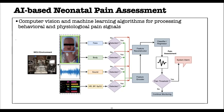For each of these pain signals, if the signal is detected it will be processed using a feature encoder. If the signal is missing, it will be reconstructed using a reconstruction algorithm. After reconstructing the modality and extracting the features, these features will be processed by a classifier to detect pain. If pain is detected, a system alarm will be created; otherwise, the system continues monitoring the different pain signals.